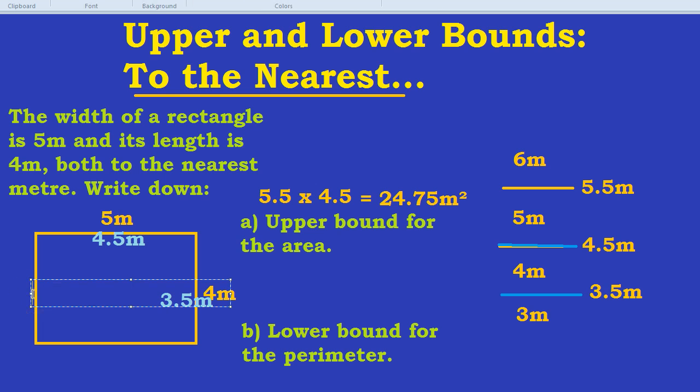So we have a 3.5 on this side as well, the same as on the right-hand side, and a 4.5 down here, the same as the top, because it's a rectangle. Opposite sides are equal. Adding that all together, that would be 16 metres. 4.5 plus 4.5 is 9. 3.5 plus 3.5 is 7. And 9 plus 7 is 16 metres. So the lower bound for the perimeter equals 16 metres.